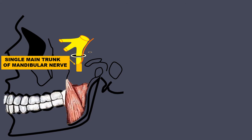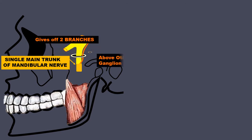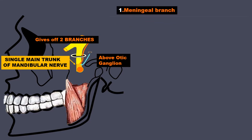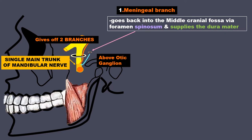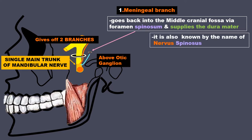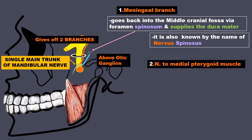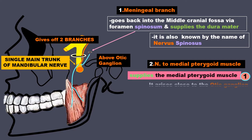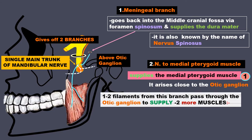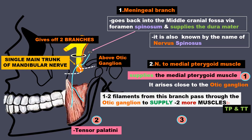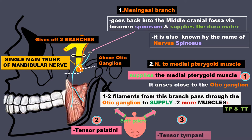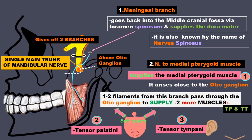The single main trunk of the mandibular nerve, before dividing, gives out two branches just above the otic ganglion. Going up is the meningeal branch — it goes back into the middle cranial fossa via the foramen spinosum and supplies the dura mater. It is also known as the nervus spinosus. Moving down is the nerve to the medial pterygoid muscle. One or two filaments from this branch pass through the otic ganglion to supply two more muscles: tensor palatini and tensor tympani. The tensor palatini tenses the soft palate during swallowing to prevent food going into the nasopharynx. The tensor tympani is present in the middle ear and tenses the tympanic membrane, reducing vibrations in the ear bones and thus reducing loudness of sound.